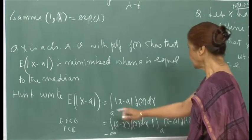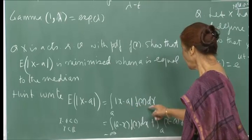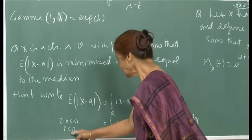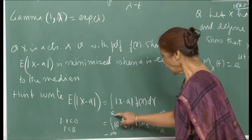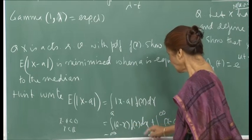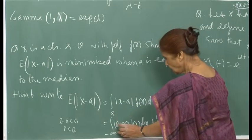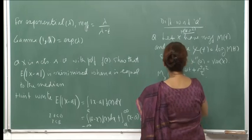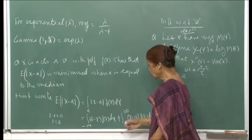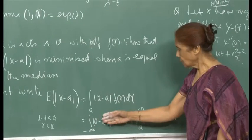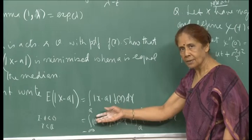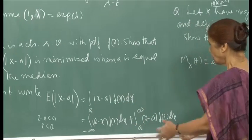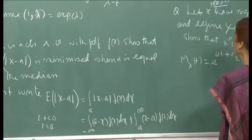The hint: E[|x − a|] = ∫_{−∞}^a (a−x) f(x) dx + ∫_a^∞ (x−a) f(x) dx. The integrand is positive in each region. Differentiating with respect to a using differentiation under the integral sign — where a is the limit and treated as a variable — will give the critical condition showing the median minimizes this expression.